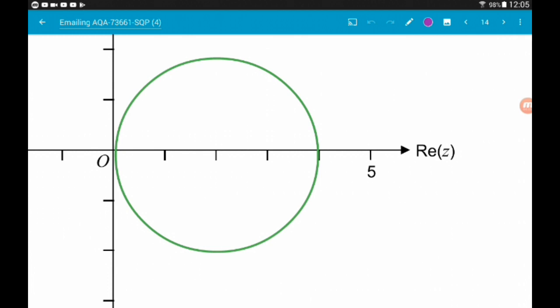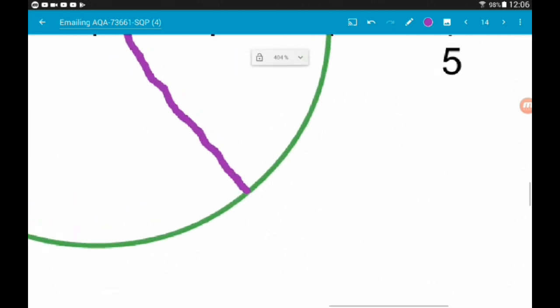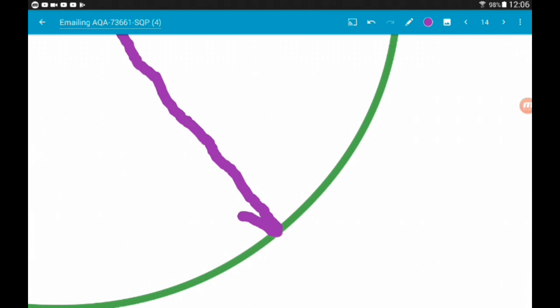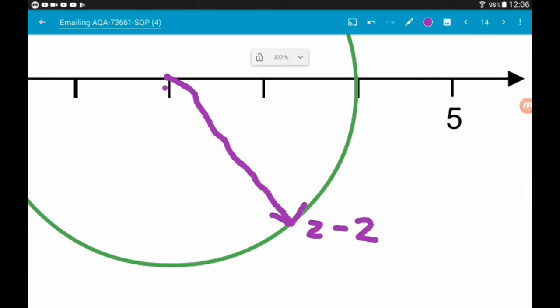We know that the complex number z minus 2 lies somewhere on the circumference of the circle. This is the locus of all points that satisfies mod z minus 2 is equal to 2. Now we're told the argument is minus pi over 3. So that means the vector z minus 2 comes out from the centre of the circle to a point below the x-axis. That is because we have a negative angle. So this is our complex number z minus 2.